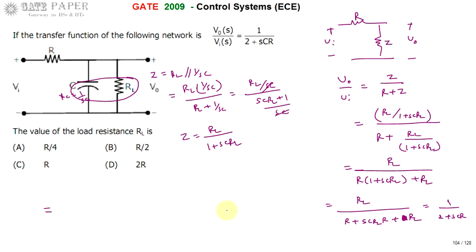Taking RL common — numerator RL and denominator RL cancel — leaving 1 divided by (R/RL + sCR + 1).